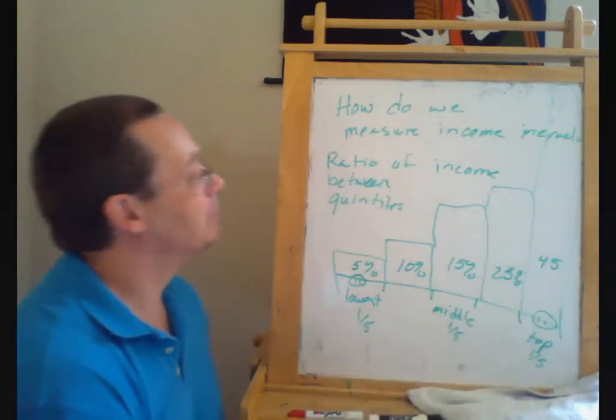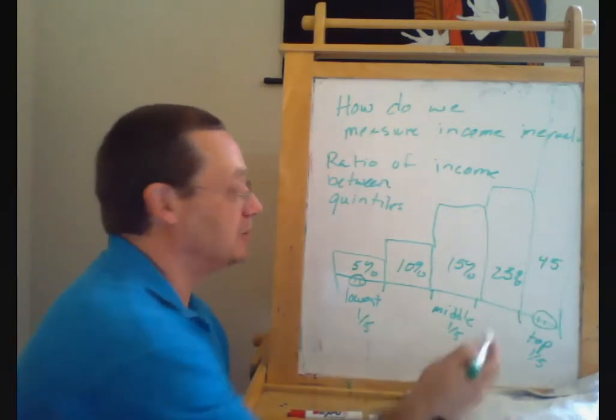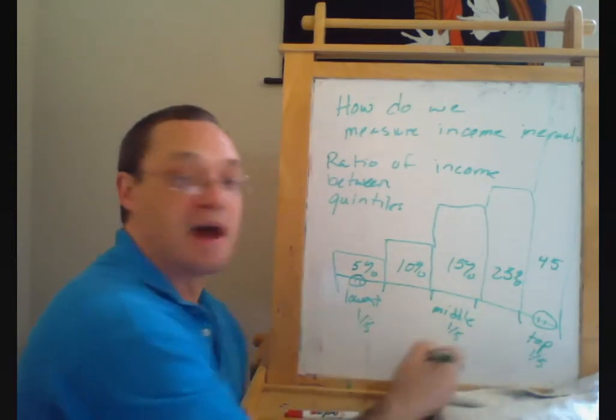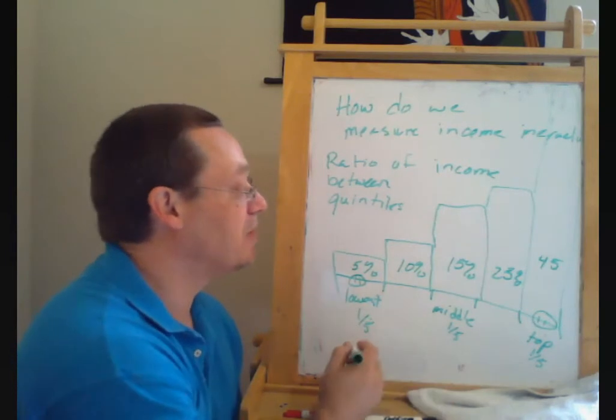So, in that case, the ratio of the income quintiles would be, the ratio between the top and the bottom fifth would be 9 to 1. So that's one way people do it.